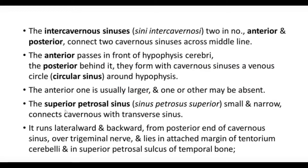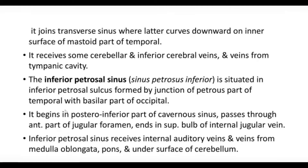The superior petrosal sinus is a small narrow sinus that connects the cavernous sinus with the transverse sinus. The inferior petrosal sinus is situated in the inferior petrosal sulcus, formed by the junction of the petrous part of the temporal bone with the basilar part of the occipital bone. This groove lies between the two bones where they meet, and this sulcus accommodates the inferior petrosal sinus.